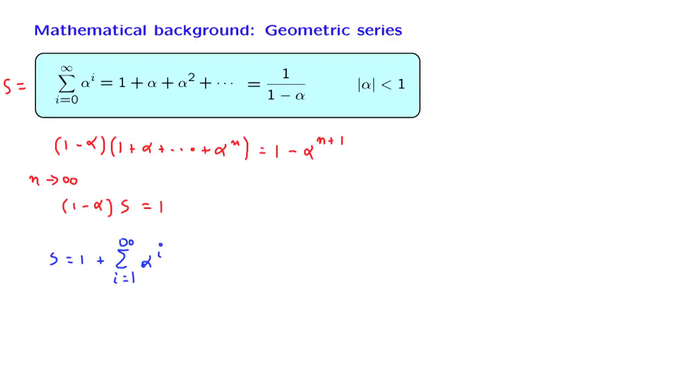Now, we can take a factor of alpha out of this infinite sum and write it as 1 plus alpha, the sum of alpha to the i. But because we took out one factor of alpha, here we're going to have smaller powers. So now the sum starts from 0 and goes up to infinity.